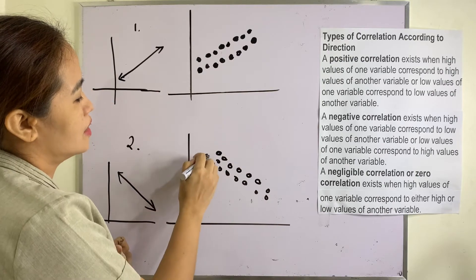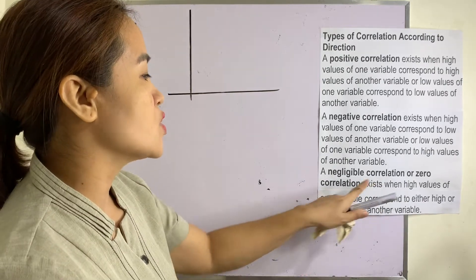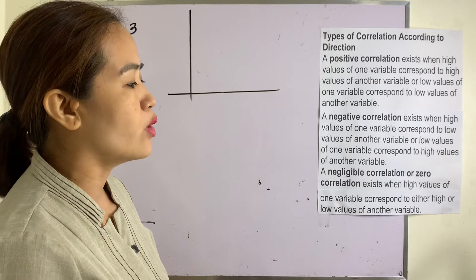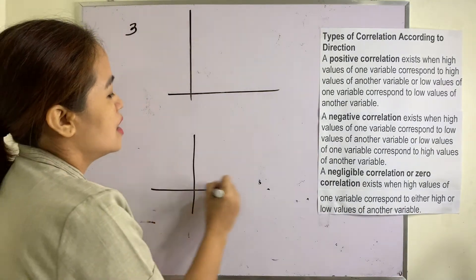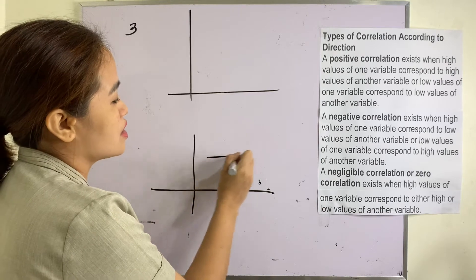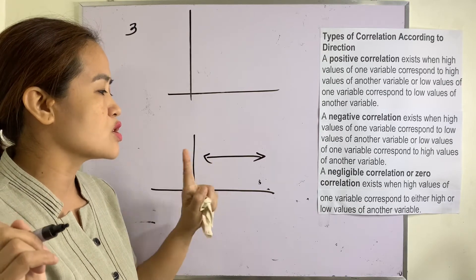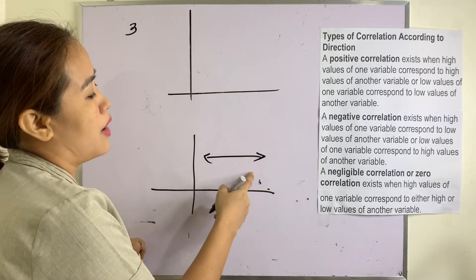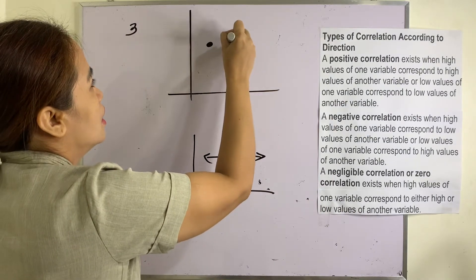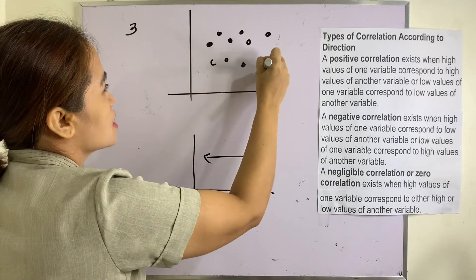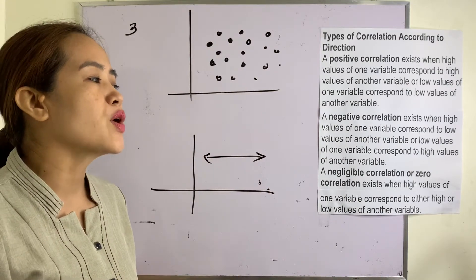So this one is a negative correlation. A negligible or zero correlation exists when high values of one variable correspond to either high or low values of another variable. It is the same as a linear equation whose slope is zero — graphed as a horizontal line. If you draw the dots this way, scattered with no upward or downward trend, this is a zero or negligible correlation.